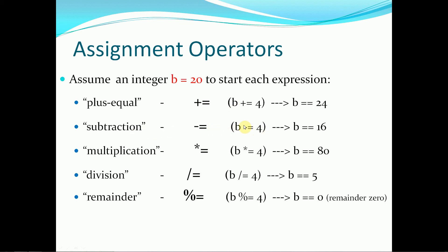If we have b minus equals 4, we're taking 20 initially, and then we're going to subtract 4 from it and store it back into the same variable b. And in this case, the result is 16.